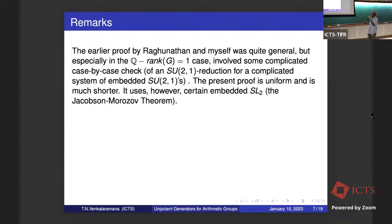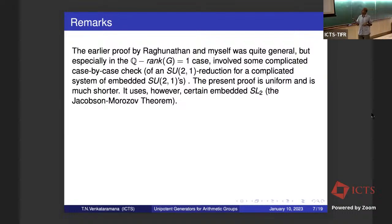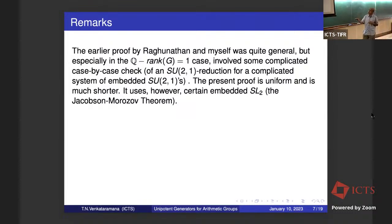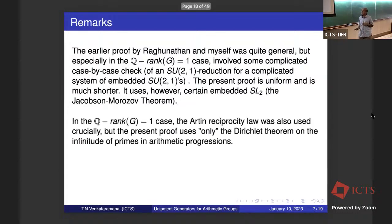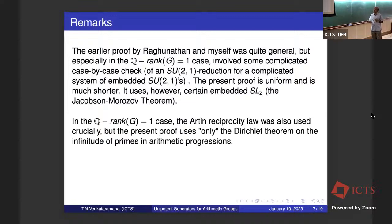The proof I have now is kind of uniform and perhaps shorter — I've made the strong claim it is much shorter. It uses an embedded SL₂ in place of SU(2,1), provided by the Jacobson-Morozov theorem, about which I would not say much. One more point to sell this proof: in the ℚ-rank one case, the earlier paper used the Artin reciprocity law quite a bit, but this proof only uses the Dirichlet theorem on the infinitude of primes in arithmetic progressions.